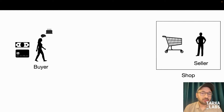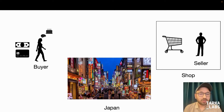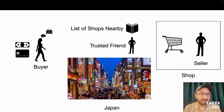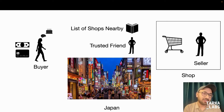Let's look at another situation. The same buyer wants to buy a cake but in a different country. The buyer doesn't know where the shop is and doesn't know the language. So the buyer goes to a trusted friend who has a list of all the shops nearby. The friend can find out which shop has the product and send the buyer there. For the language problem, the friend teaches certain keywords or cheat codes so the buyer can interact with the seller just enough to make the transaction. The buyer goes to the shop, pays and takes the product home.